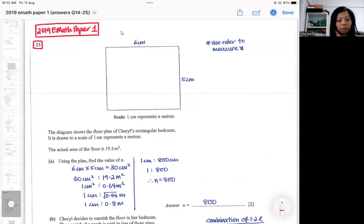For this question, you will need to use the ruler to measure. Some students got stuck because they didn't realize they need to use your ruler to do the actual measurement. If you look carefully, they bold up the word scale. One centimeter represents n meters. The question says it shows the floor plan of Cheryl's rectangular bedroom, and it is drawn to a scale of one centimeter representing n meters.